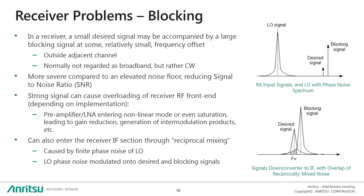A blocking scenario occurs when a small signal is accompanied by a large one at some relatively small frequency offset. This is usually distinguished from adjacent channel interference by being further away from the wanted signal, and is normally not a broadband signal but rather a pure sinusoid. A strong signal can cause overloading of the linear devices of the receiver RF front-end — for example, the pre-amplifier or LNA can enter its non-linear operating mode or even saturation, leading to gain reduction and generation of intermodulation products.